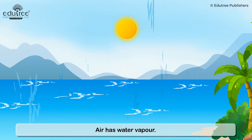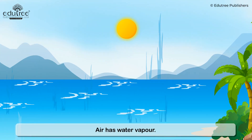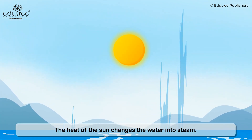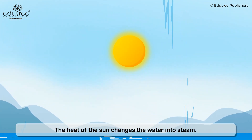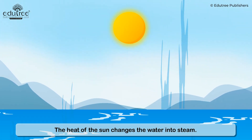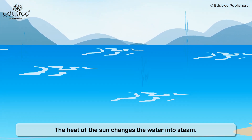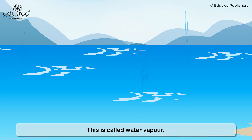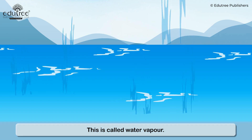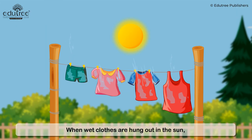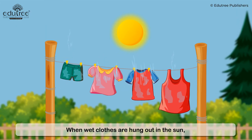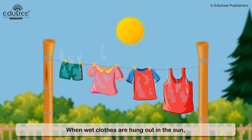Air has water vapour. The heat of the sun changes the water into steam. This is called water vapour. When wet clothes are hung out in the sun,